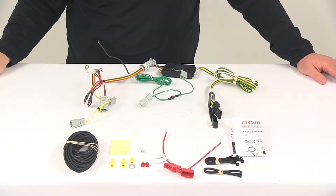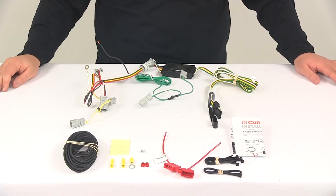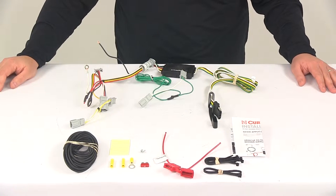Today we're taking a look at the CURT T-Connector vehicle wiring harness with the four-pole flat trailer connector. This product fits certain years and models of the Mazda CX-5.